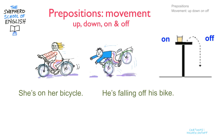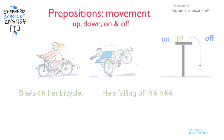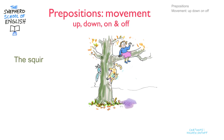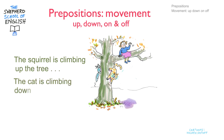And here's the third picture. There's a tree, a girl and two animals. There's a squirrel on the left and a cat on the right. The squirrel is climbing up the tree, the cat is climbing down the tree. The squirrel is going up, the cat is coming down.